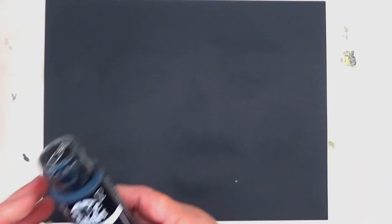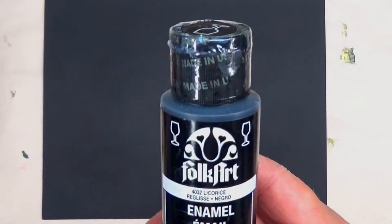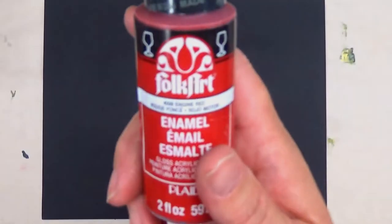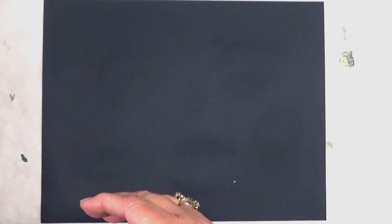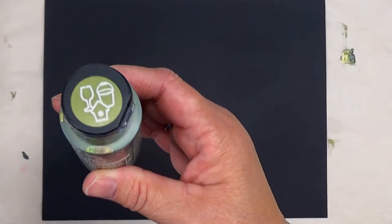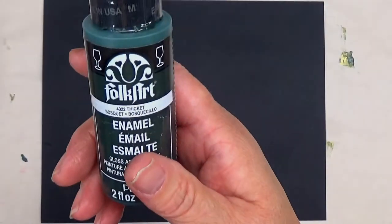To get started, I'm going to be using licorice, school bus yellow, engine red, wicker white—these are Folk Art enamels. Peridot is the only multi-surface paint, and thicket. My brushes are a number 12 flat brush and a round brush, probably a 12 or three-quarter round.